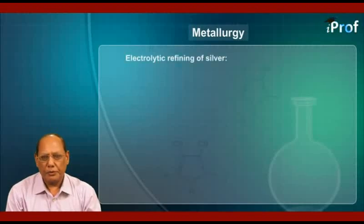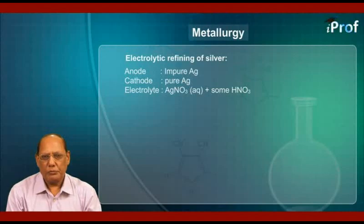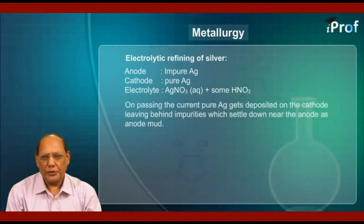Electrolytic refining of silver. For this purpose, the anode is thickened, that of the impure silver. The cathode is a thin wire or sheet of pure silver. The electrolyte is silver nitrate aqueous solution containing some nitric acid. On passing the current, pure silver gets deposited on the cathode, leaving behind impurities which settle down near the anode as anode mud.